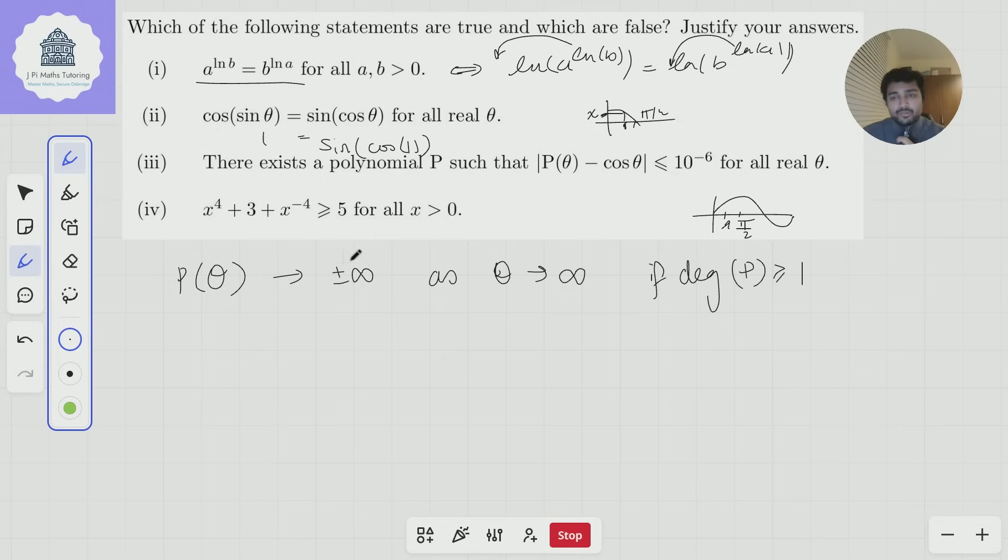And so, therefore, once θ is sufficiently large, let's say θ is a million, P(θ) is going to be very big, let's say 100, bigger than 100.